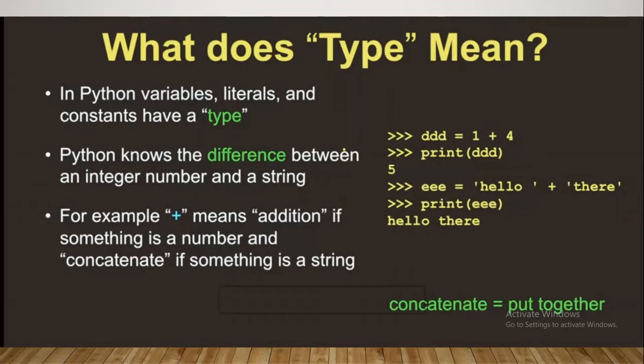The variables which we discussed - if you give a variable name like x, y, z, or any name - everyone has a type. Python knows the difference between an integer number and a string.